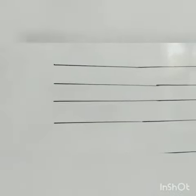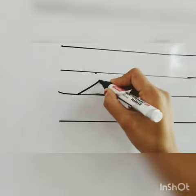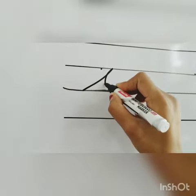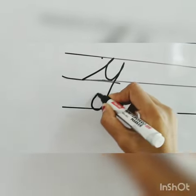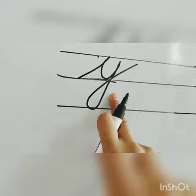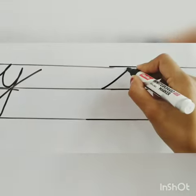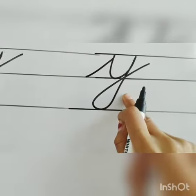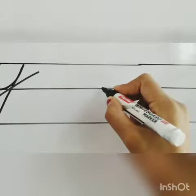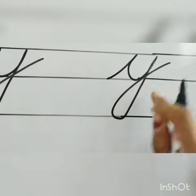You have to follow the steps. For making small cursive y, you have to start with the third line and make a slanting line, then make like a U, then a slanting line to the fourth line and a tail. Again: a slanting line, make like a U, and a standing line and a curve like this.